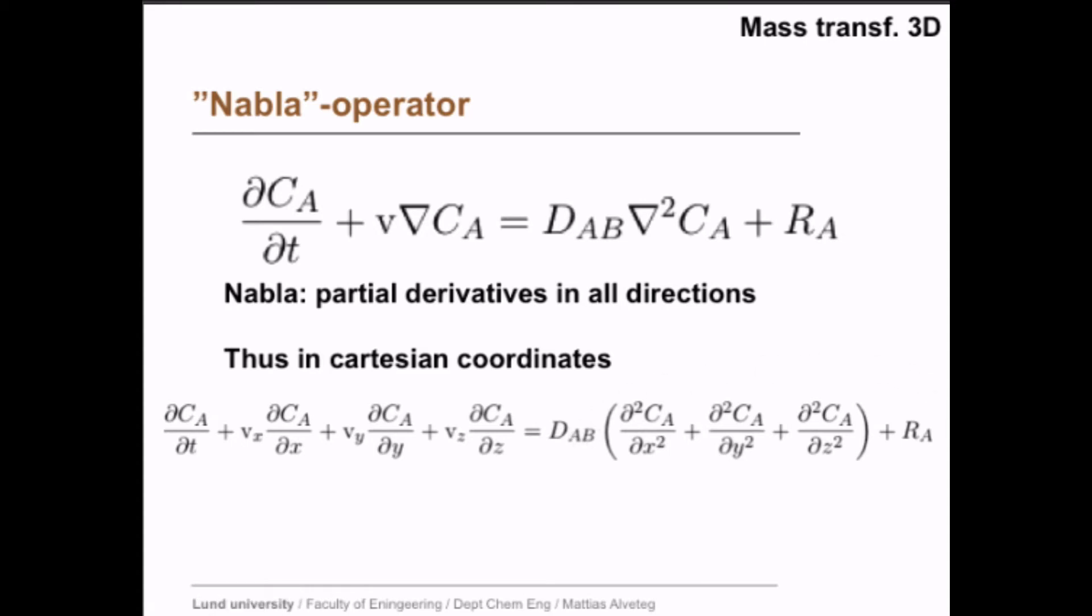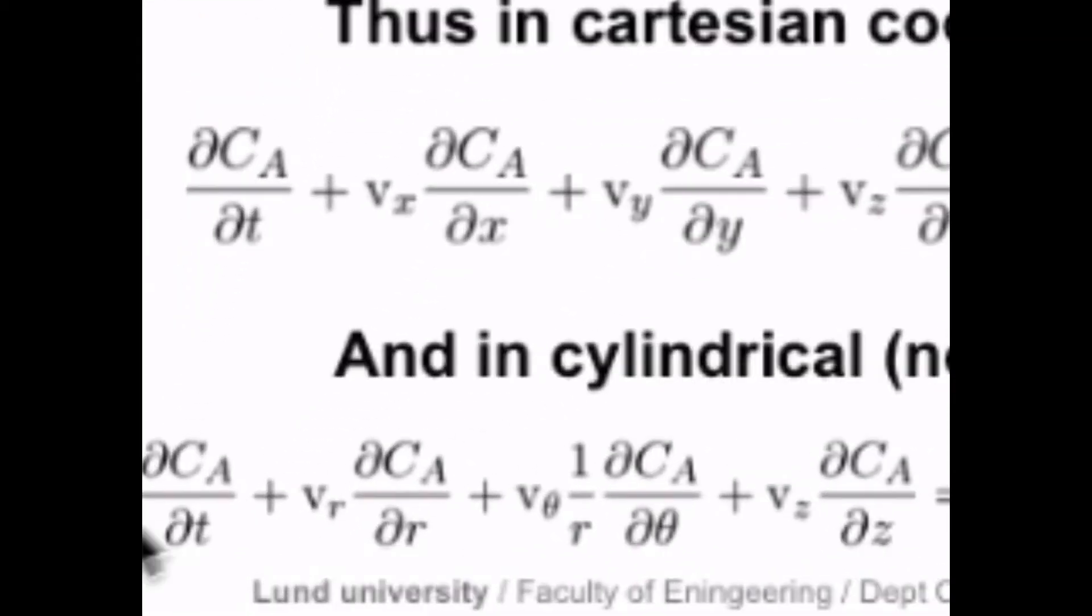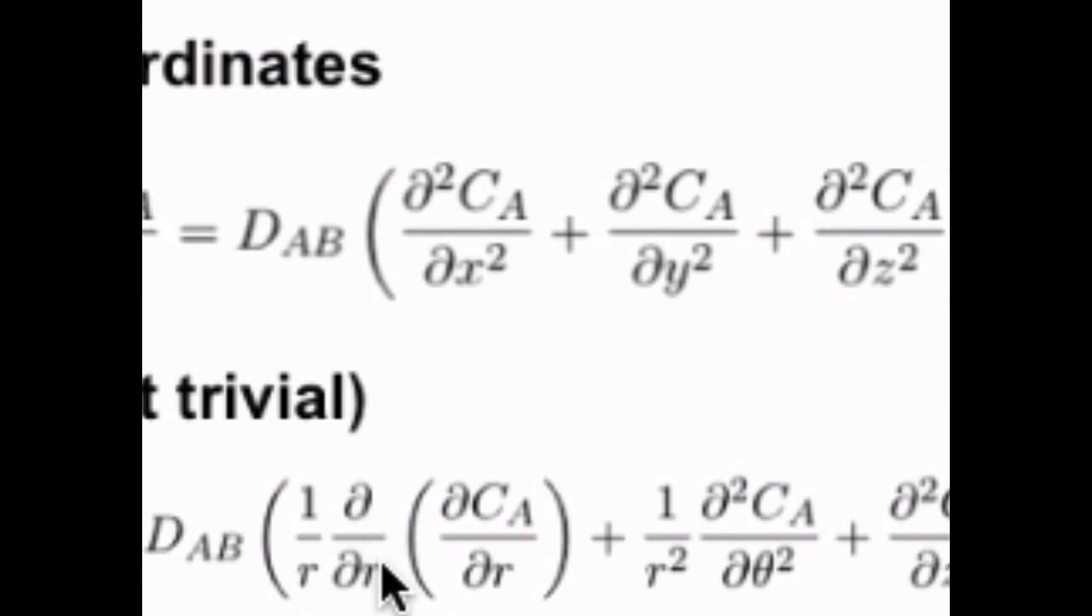In cylindrical coordinates, however, and this is not trivial, you will instead get this equation. You still have ∂CA/∂t over there. You have vr ∂CA/∂r, so so far it looks the same. But here we have the vθ, the angle velocity, how fast we move, turn around in this cylinder, times 1 divided by r. And over here we have 1 divided by r d/dr, 1 divided by r squared.